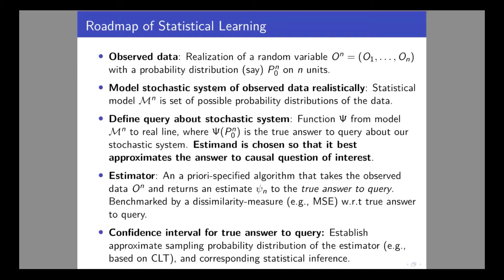The set of possible densities or probability distributions of the data we denote with calligraphic M, and you are making the statement that the true distribution is in there. Here we start distinguishing from traditional statistics, where statistical models like logistic regression, linear regression, or Cox proportional hazard regression make simplistic and unrealistic assumptions about data distributions. Contrary to that, we only make assumptions we can actually defend, such as knowing that treatment depends only on certain covariates — conditional independence assumptions.